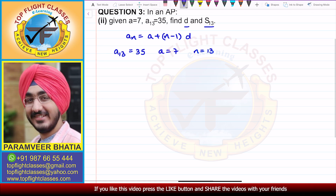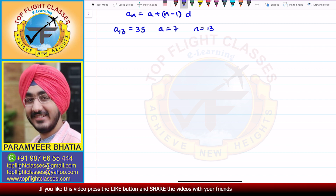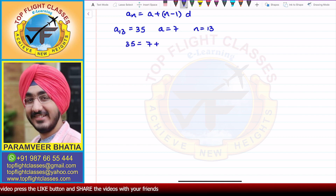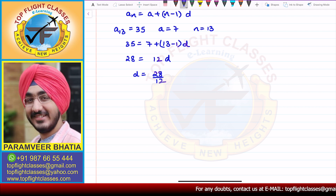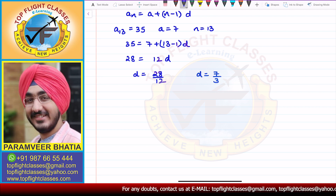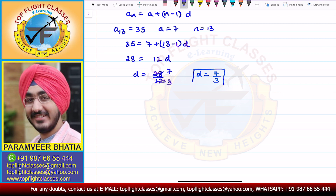Let us find D. From here, I get A13 which is 35 is equal to A that is 7 plus N that is 13 minus 1 times D. So here we have 35 minus 7, which gives 28, is equal to 12D. So D comes out to be 28 by 12, and cancelling by 4, D is equal to 7 by 3.